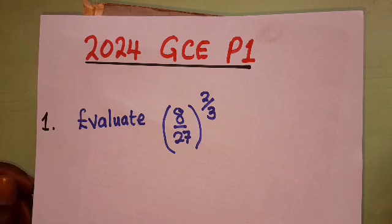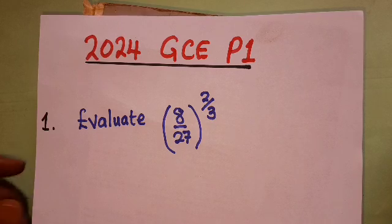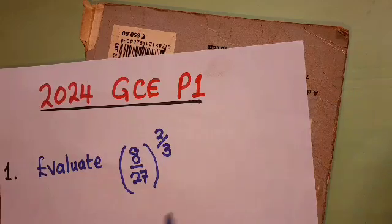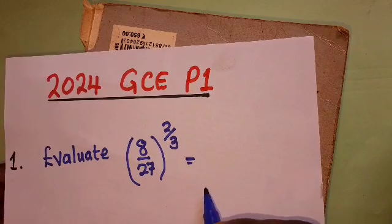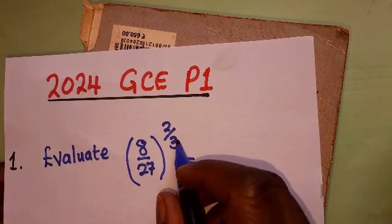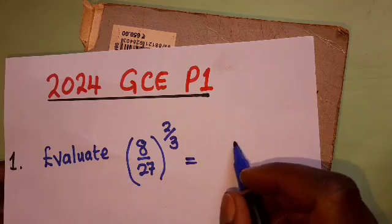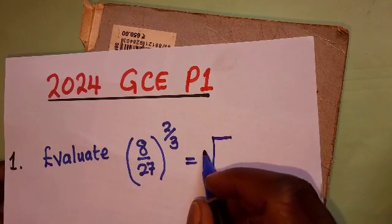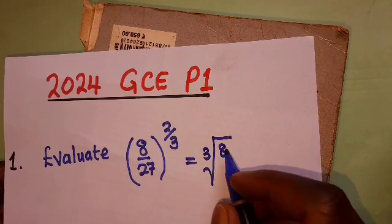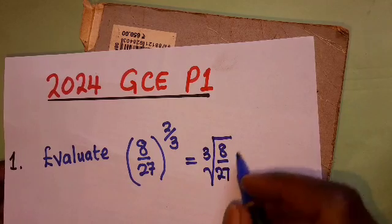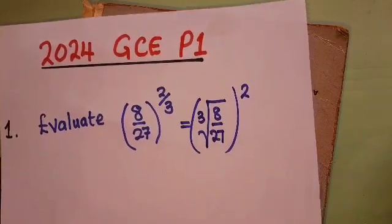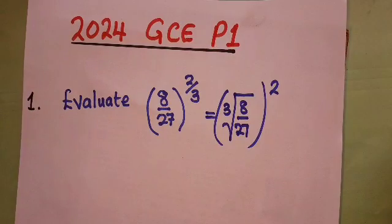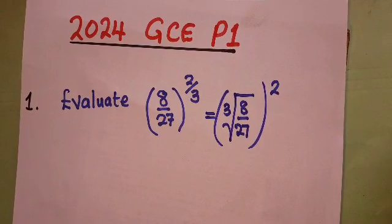This is from index notation and it was a very straightforward question that didn't need much effort. The first step we need to do is to get the cube root of this fraction here - 8 over 27. You do this, and then the 2 has to remain on top there.